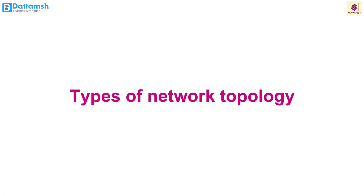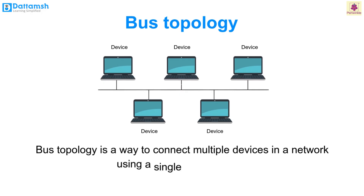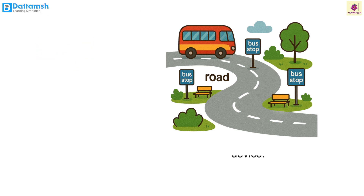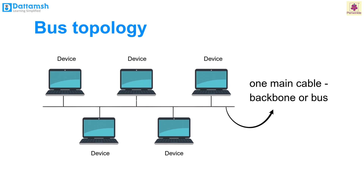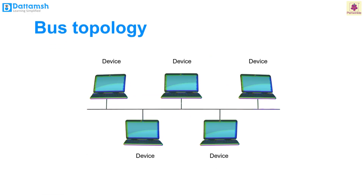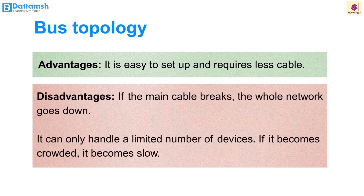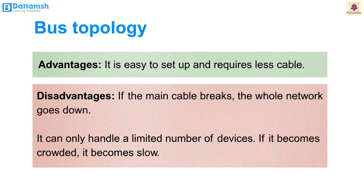Bus topology. Bus topology connects multiple devices using a single central cable. Imagine a single road with several bus stops — each bus stop represents a device. All devices are connected to one main cable called the backbone or bus. When a device wants to send information, data travels along the cable to all other devices; only the intended recipient picks it up and responds. Advantages: simple to set up and requires less cable. Disadvantages: if the main cable breaks, the whole network goes down; it can only handle a limited number of devices, and becomes slow when crowded.